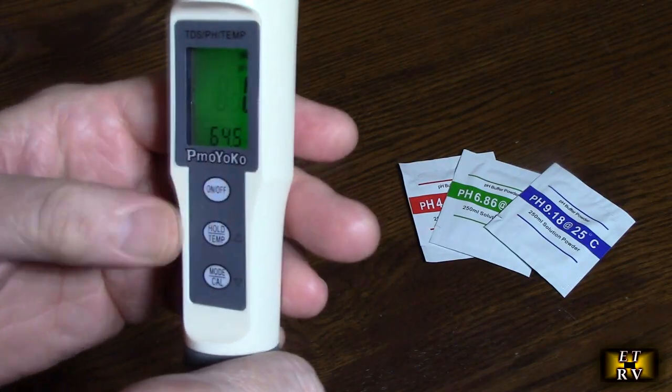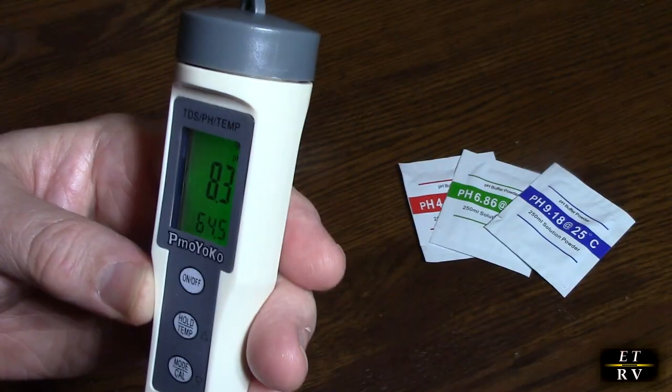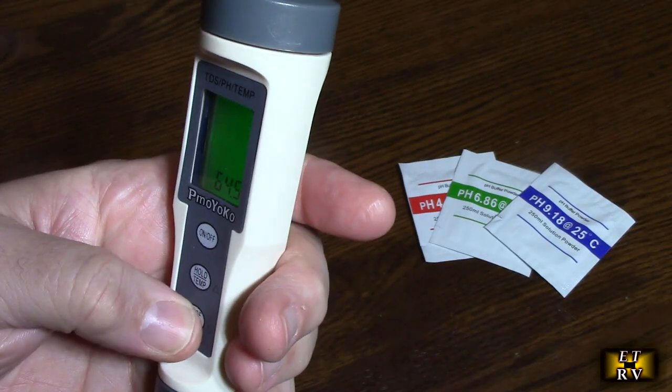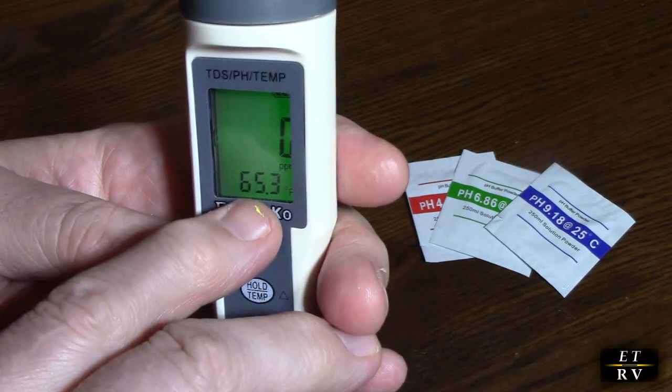So you have an on-off button right there, and you see the display comes on right there. Really nice. Now that's pH, and it's showing me the last value that I had. And then you go to mode right there, and you have parts per million right there, and right below is the temperature.